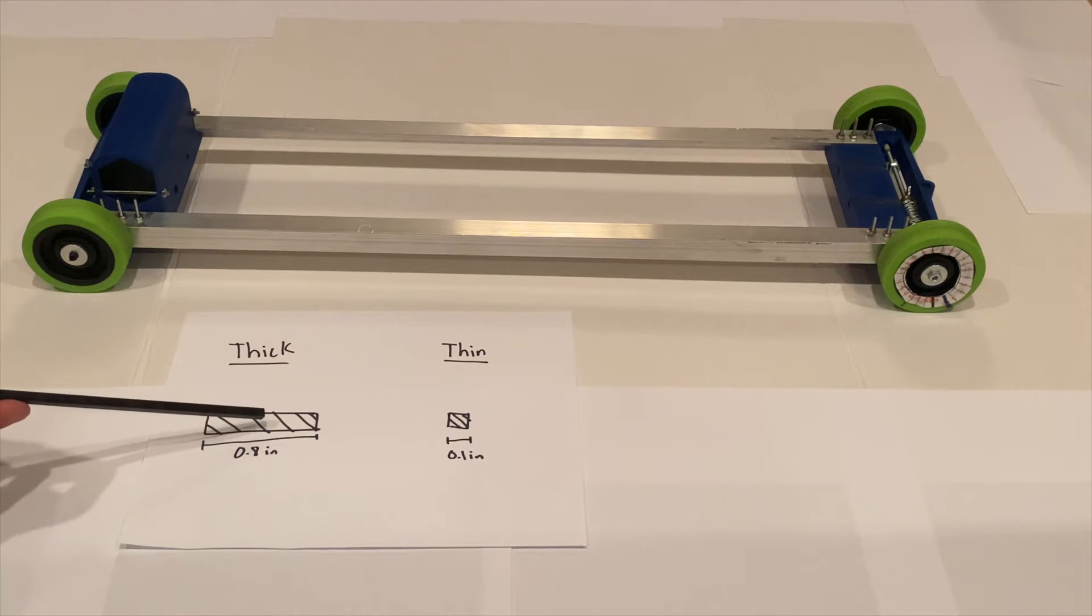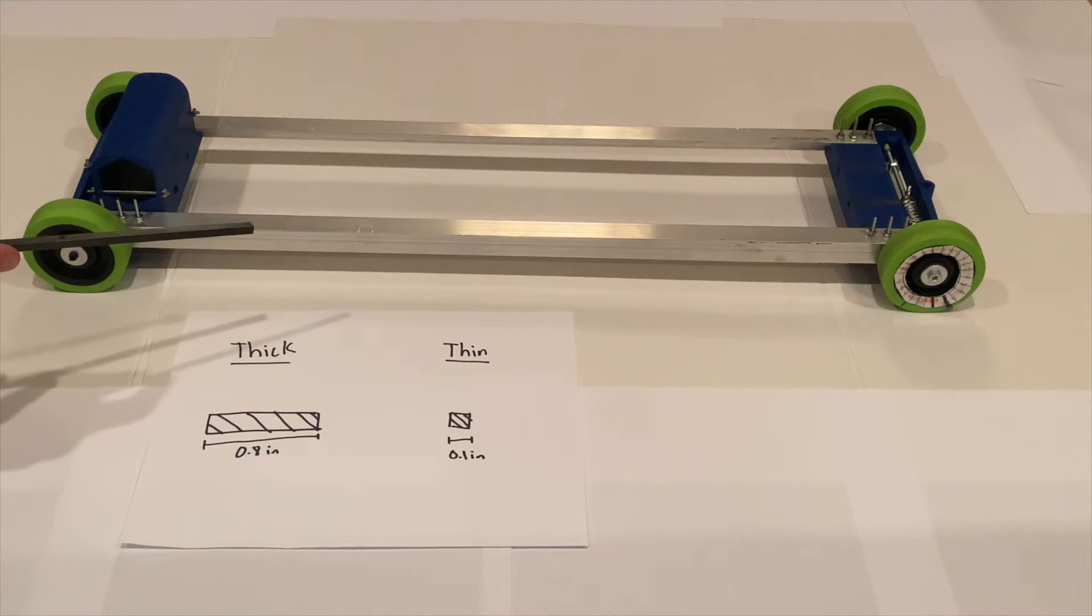And with more contact with the ground, you're going to be able to keep your car going straight and run down the track a little bit more smoothly. So if you want your car to go a little bit straighter than it already is and stay on track, then you're going to want to invest in thicker wheels compared to thinner wheels that you're currently using.